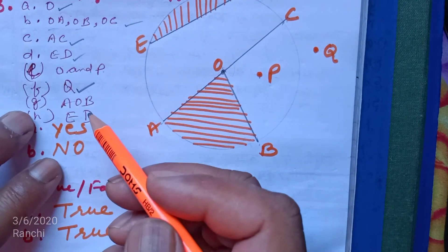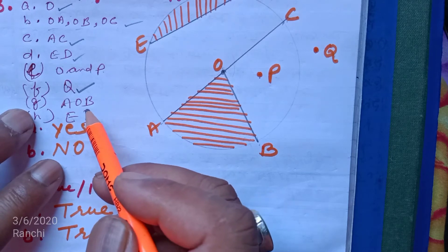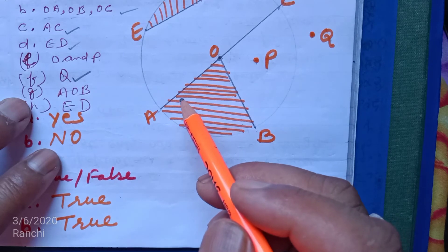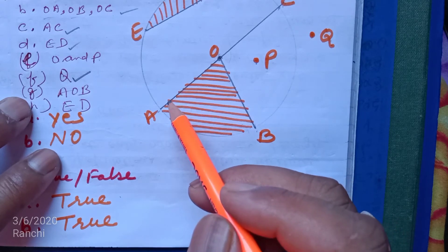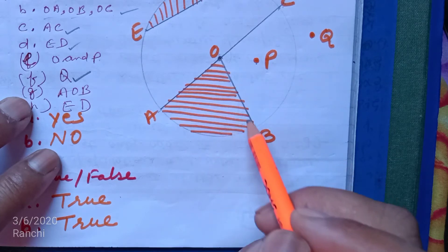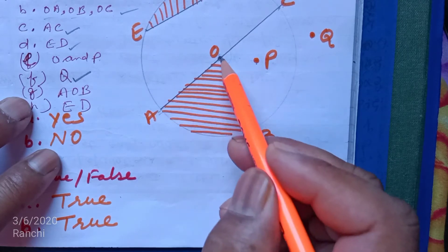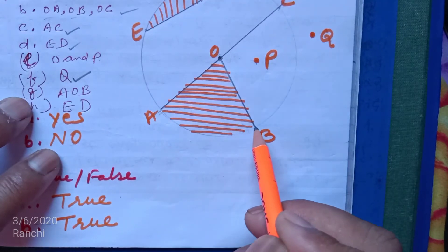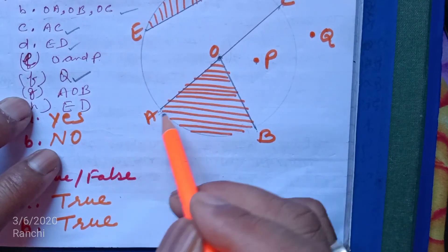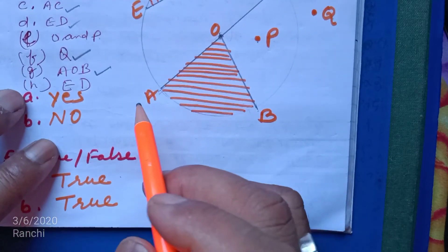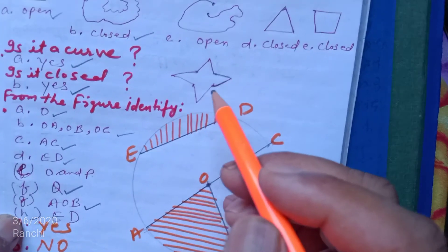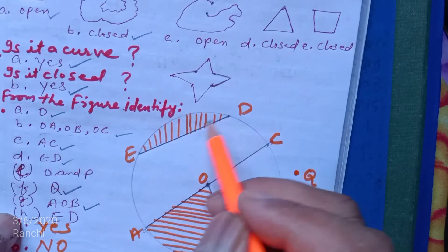Number G: a sector. Sector is an area enclosed by two radii and an arc. OA and OB are two radii and AB is an arc, so this area is a sector. H: a segment, area enclosed by a chord and an arc. This area is called a segment.